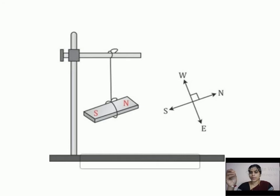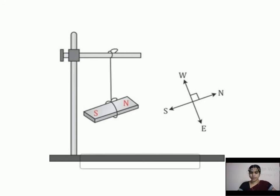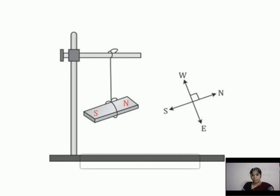We call it a freely suspended magnet. This is the north pole and this is the south pole. This magnet is free to move in any direction. If we turn the magnet by hand so that it points in another direction and then release it, after a while the magnet comes back to its earlier position and again points in the same north-south direction. The end of the magnet which points towards the north direction is called the north seeking end or north pole of the magnet. The end which points towards the south direction is called the south seeking end or south pole of the magnet.